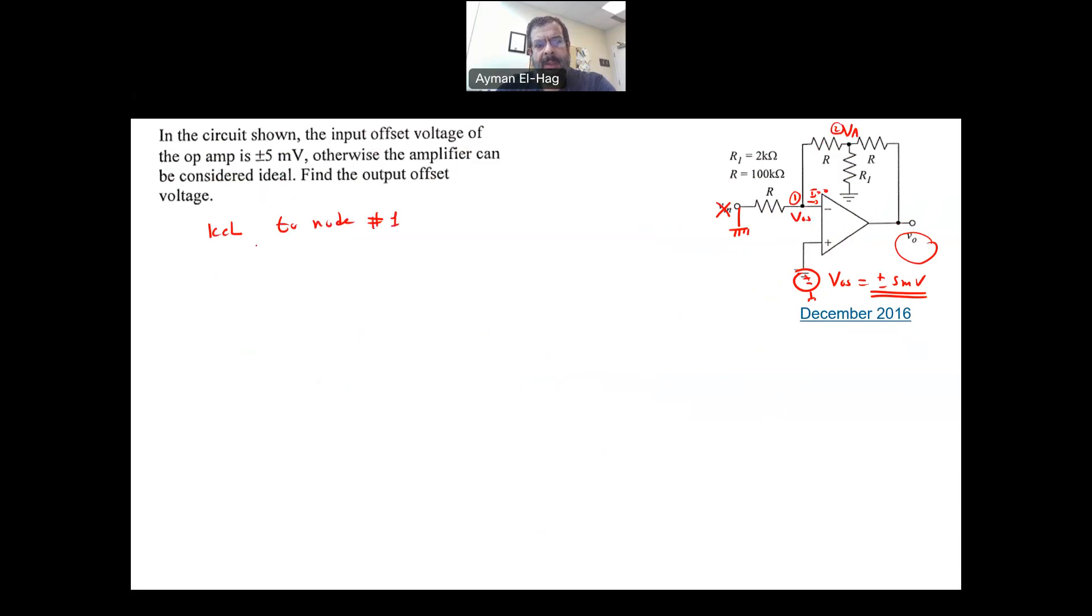So, apply KCL to node number one. Assume the currents are leaving. So, you will have VOS minus zero divided by R. R is 100 kilo. Plus, VOS minus VA divided by another R, same R, which is, again, 100 kilo equal to zero. So, if you multiply everything times 100 kilo, you will have VOS plus VOS minus VA equal to zero, or your VA is equal to two VOS. So, that is the first equation here. So, I will apply KCL, then I will apply KCL to node number two.